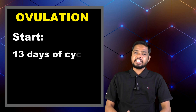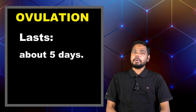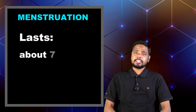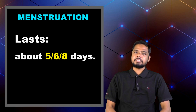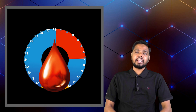Normally ovulation dates start on day 13 of the women's cycle. It lasts at least 5 days, but sometimes it can stay for 7 days. Menstruation starts on the first day of the women's cycle. It stays normally 7 days, but sometimes it can stay for 5, 6 or 8 days. If women experience an irregular period, their ovulation and menstruation dates can be unusual and irregular every month.